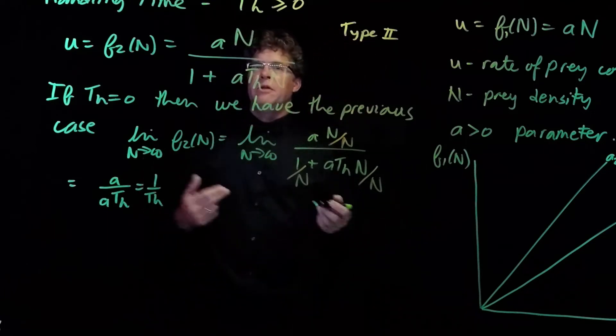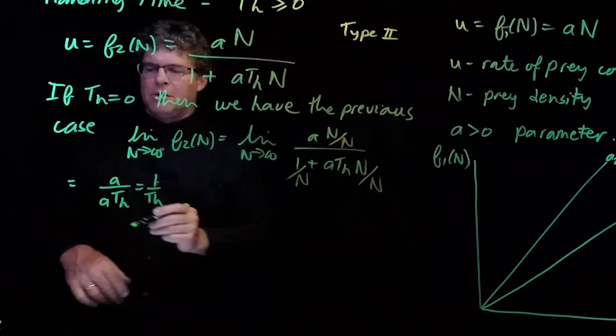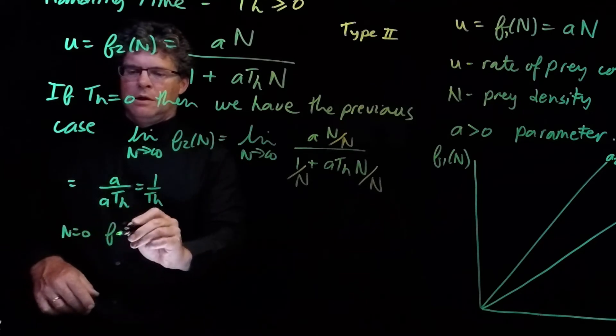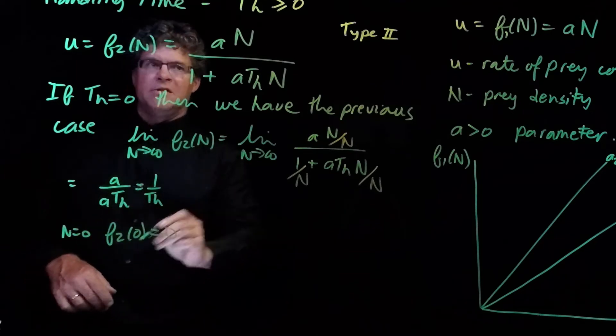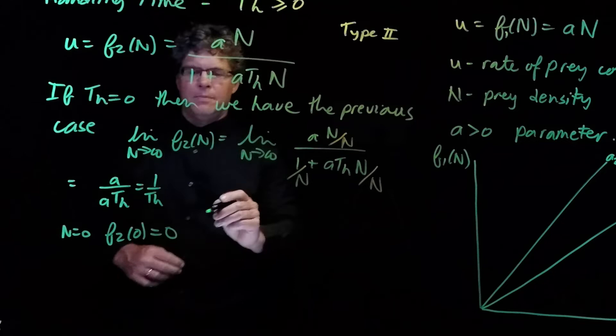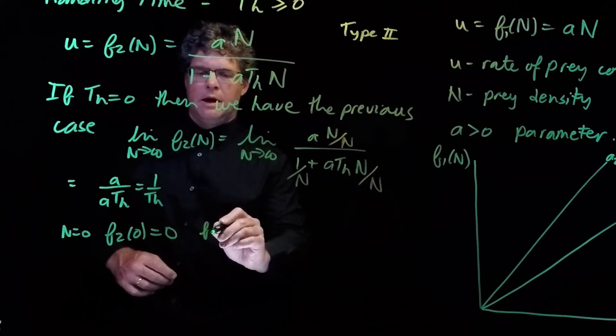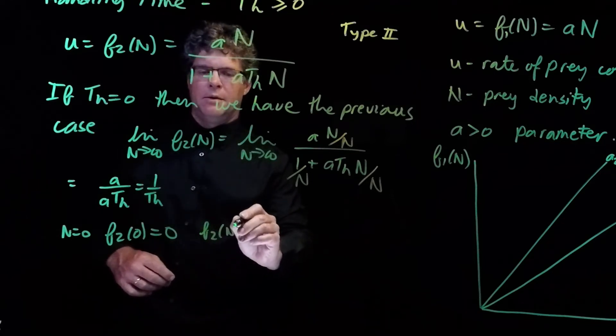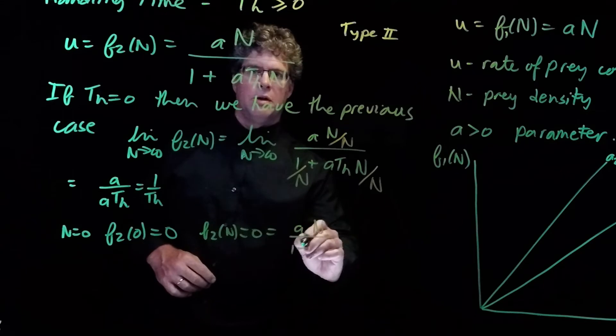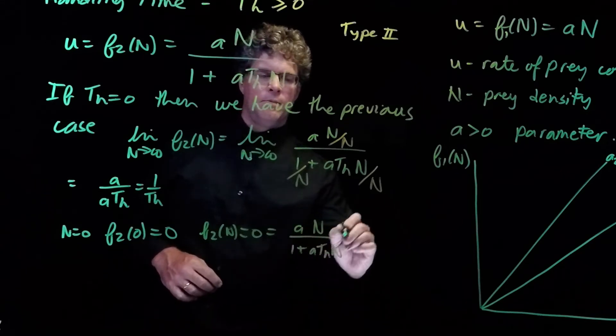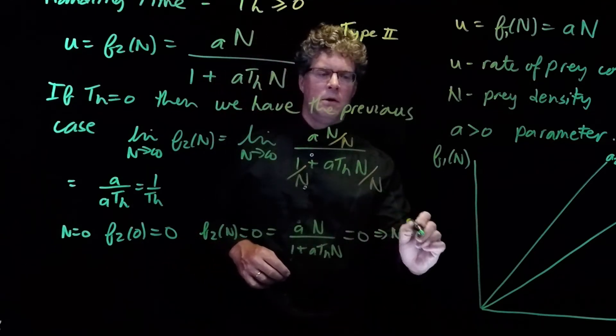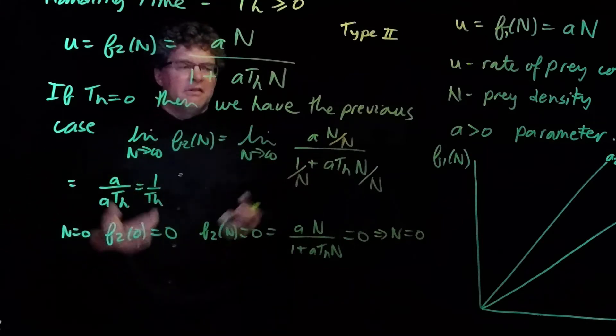We can also look at the intercepts. And so, if n is equal to 0, f2 of 0 is equal to 0. And if f2 of n is equal to 0, then we have a n over 1 plus a T sub h n is equal to 0. And this gives us that n equals 0. Okay, so the intercept is 0, 0.